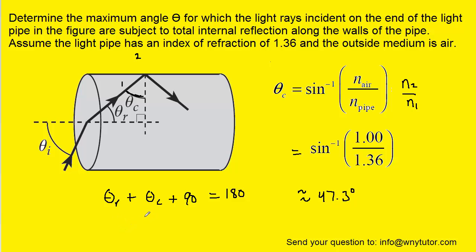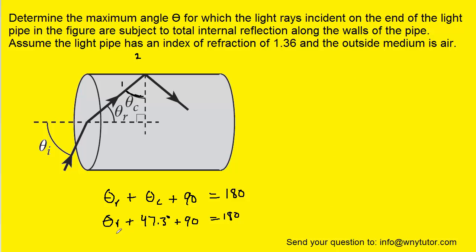And so we'll plug in the value that we just found for theta_c. And then through a little bit of simple algebra, you should be able to figure out that theta_r is roughly 42.7 degrees.